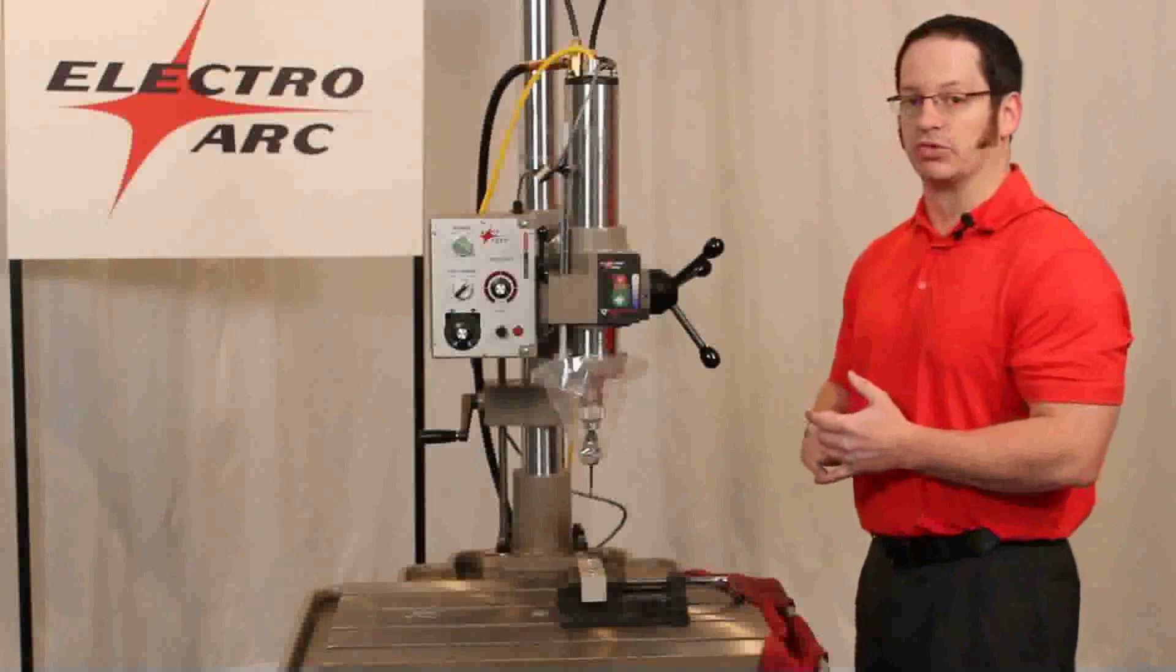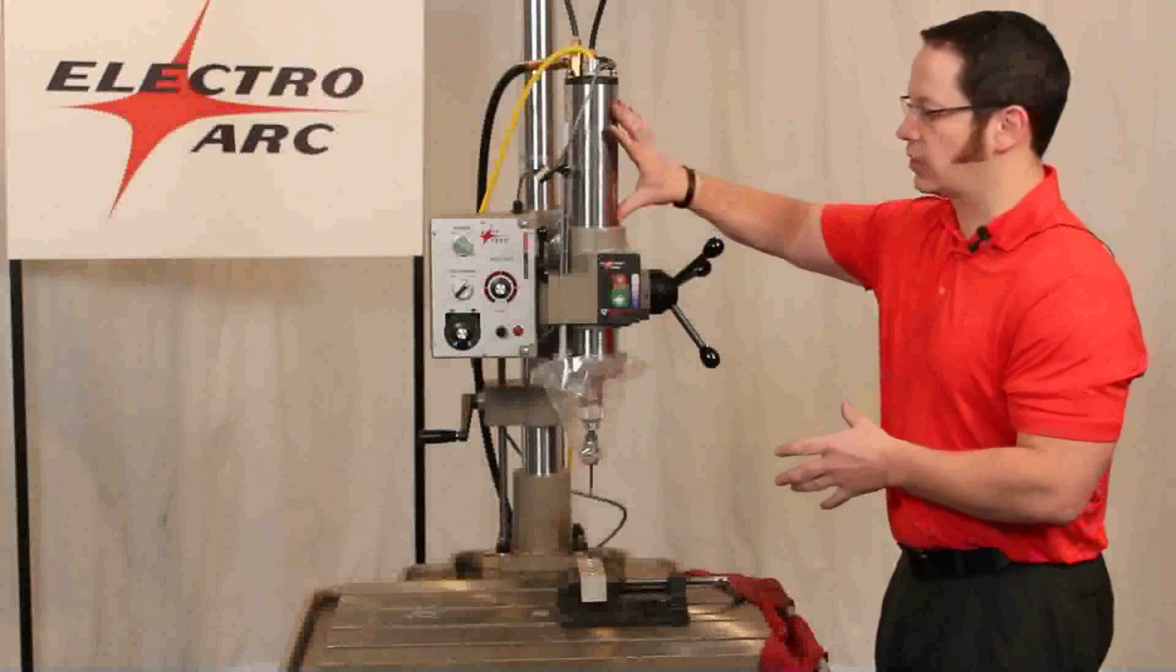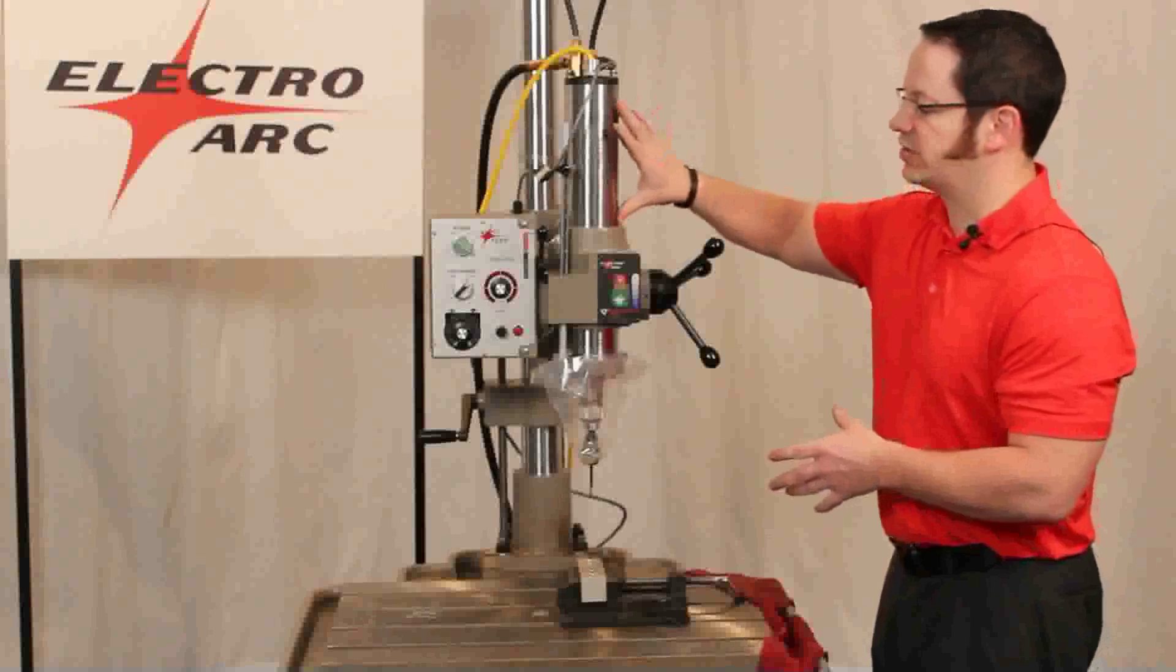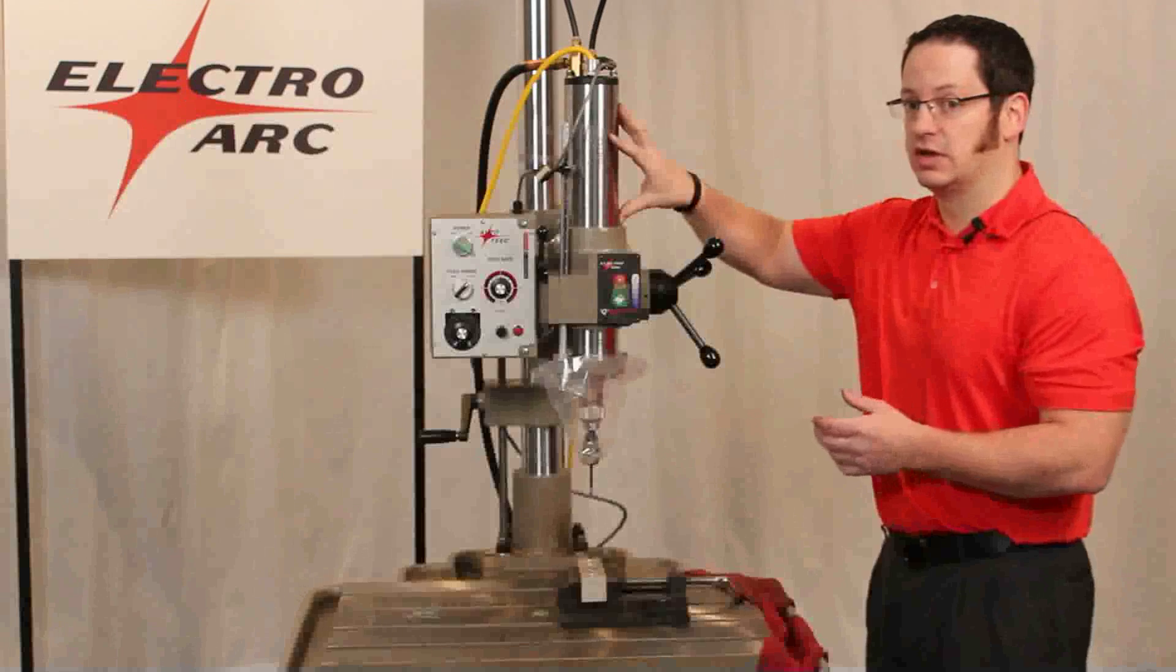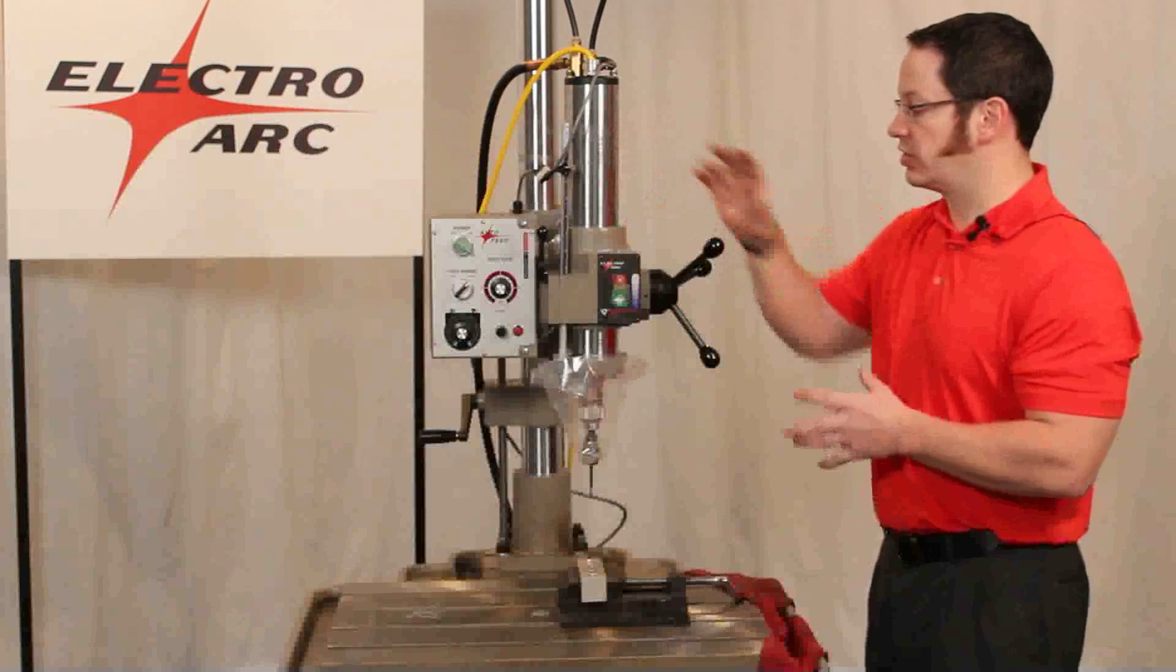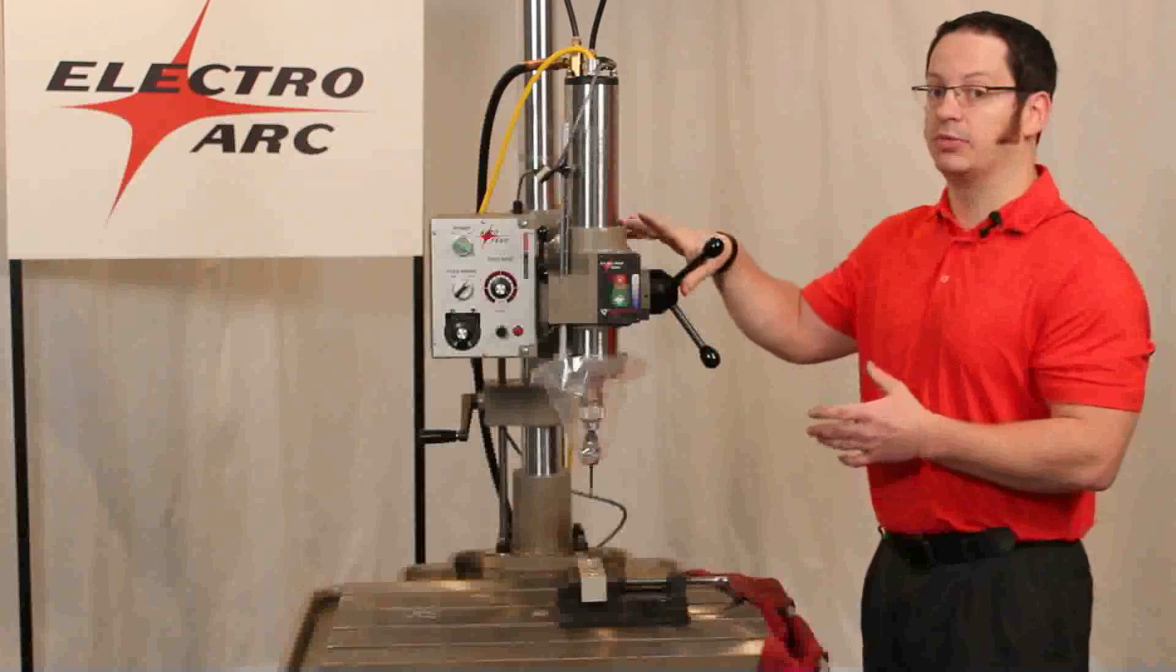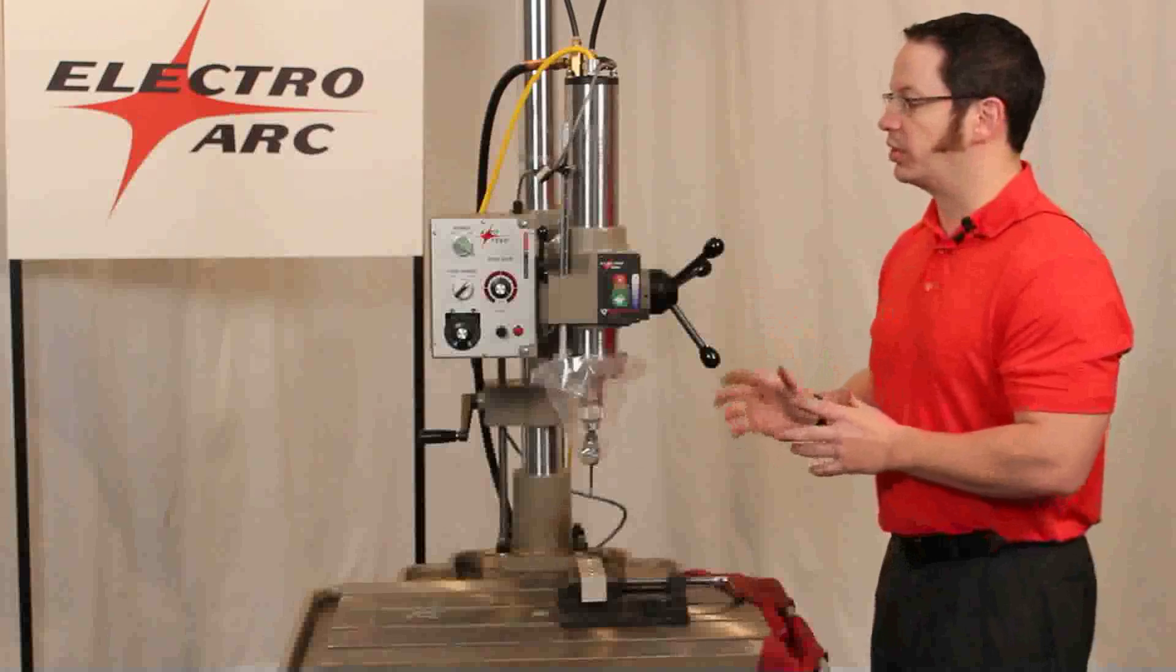We have a number of different portable machines. This particular machine has our IQ, our in-the-quill head. This is a heavy-duty precision head which can handle electrodes as small as 20 thousandths for removing an ONT 80 tap. This head with this power supply can also remove taps up to two inches in a single pass, so very wide range of capability for this machine.